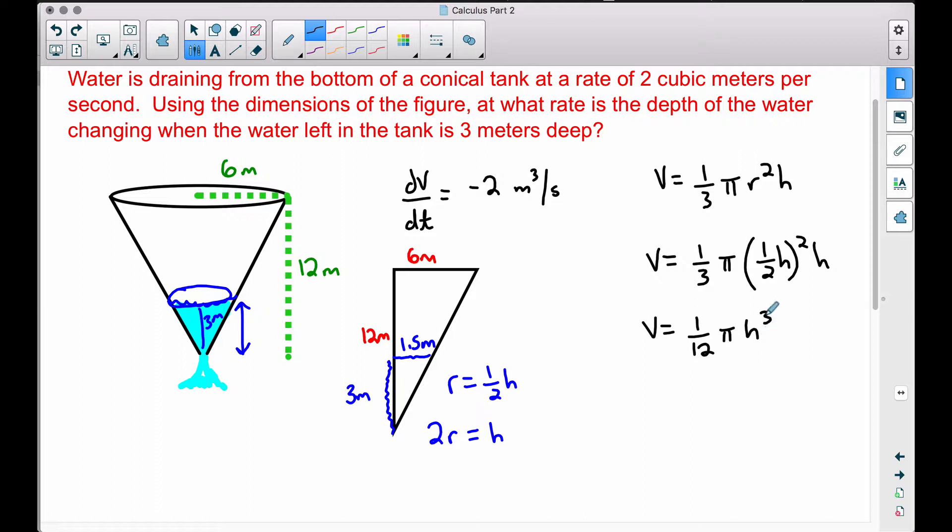When we differentiate this, we'll have a dh/dt, which is going to ultimately be the answer to this question, the rate of change of the depth of the water, the height of the water. So let's differentiate v with respect to time. The derivative of v is dV/dt, is equal to, differentiating the variable h over here, that's the only variable we have to worry about, pulling down the three, multiplying it by one-twelfth, and simplifying, we have one-fourth pi h squared, don't forget to subtract one. And since we're differentiating with respect to time, don't forget your dh/dt.